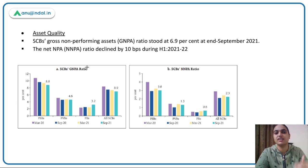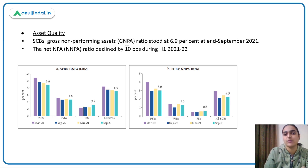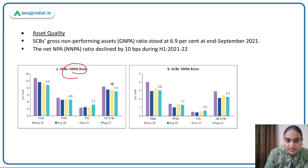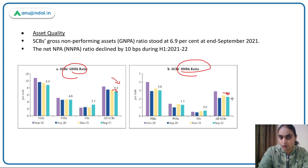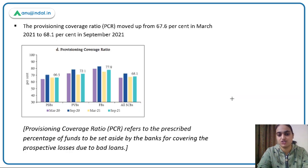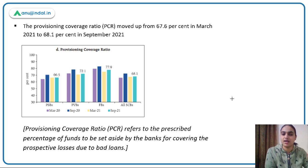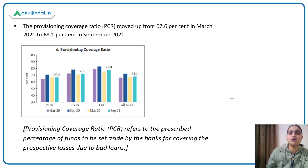On asset quality: Scheduled Commercial Banks' gross NPA as well as net NPA have both declined. The gross NPA reduced to 6.9% and net NPA ratio reduced to 2.3%, showing improved asset quality. The Provisioning Coverage Ratio — how much provisions are being set aside against bad loans — has moved up slightly from 67.6% to 68.1%, meaning more provisions are being maintained against bad loans.